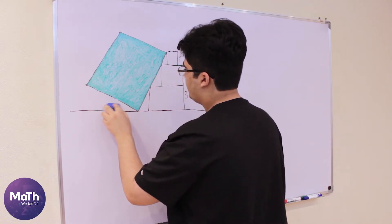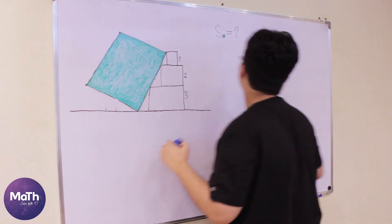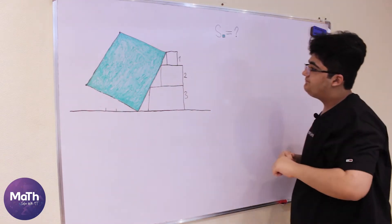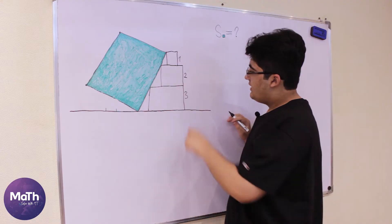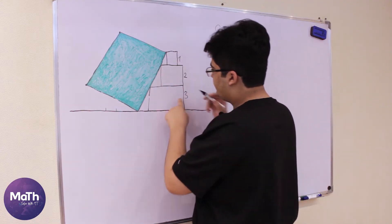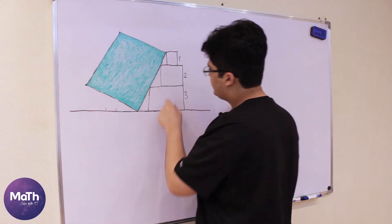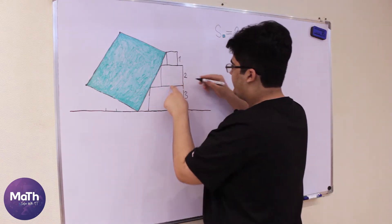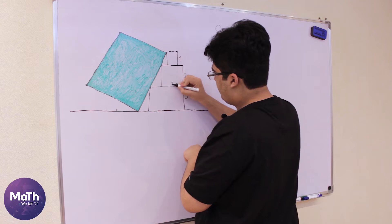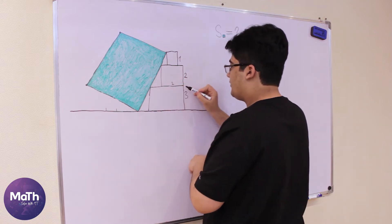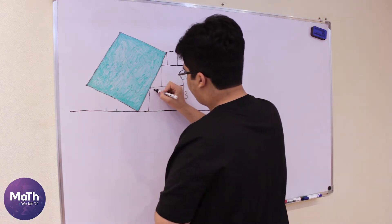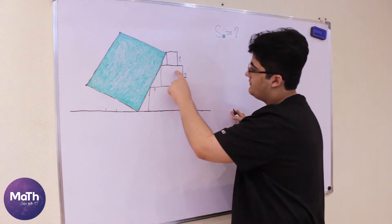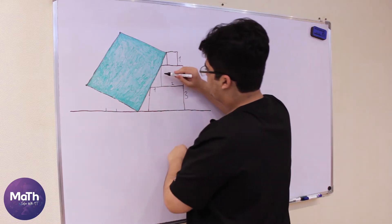If this is a square and this side is 3, then this side is also 3. But we know that this side is 2, and if the total is 3, then this will be 1. This is a square, so this side is also 2.